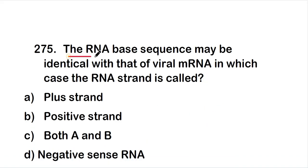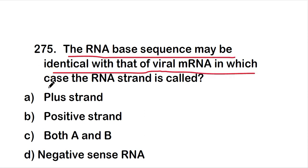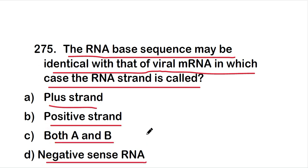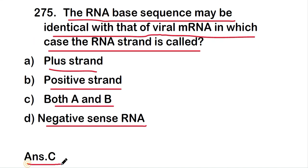The next question: the RNA-based sequence may be identical with that of viral mRNA — in which case the RNA strand is called? The options are plus strand, positive strand, both A and B, or negative sense RNA. The right answer is option C — both A and B. When the RNA sequence is identical to viral mRNA, the strand is called plus strand or positive strand.